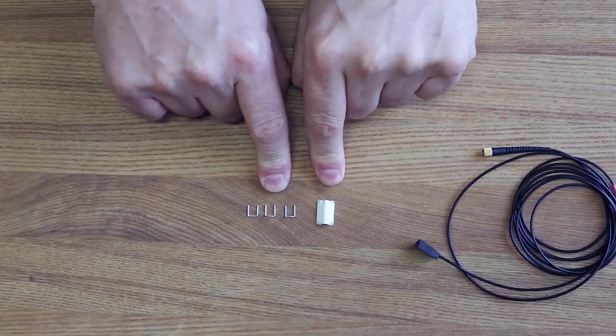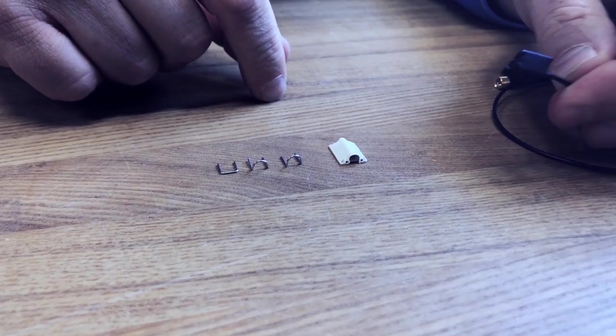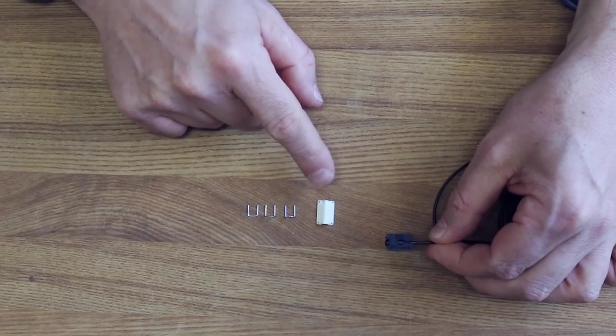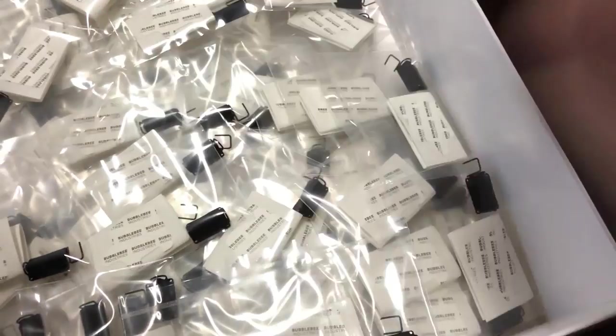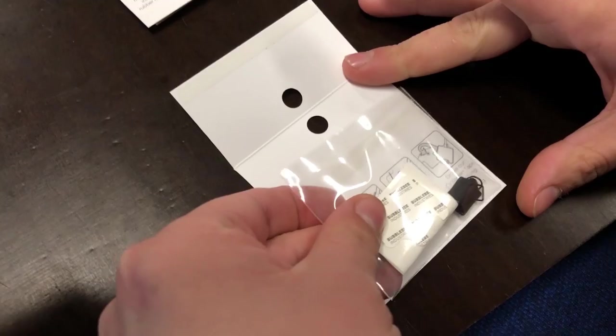This is the Bubble Bee Concealer for the DPA 6060 microphone and it's a tiny concealer and we know there are small parts in the box.